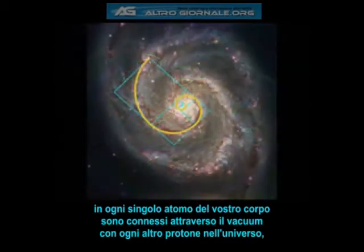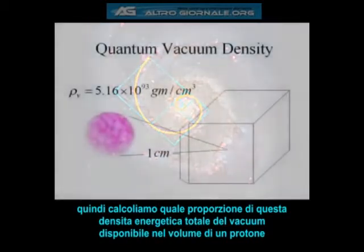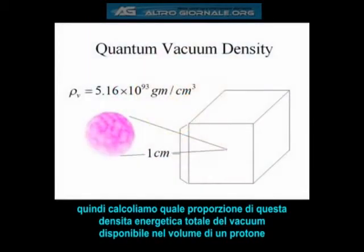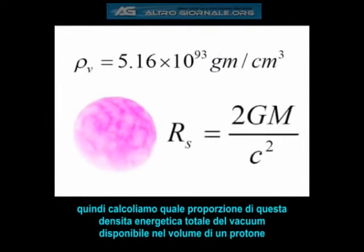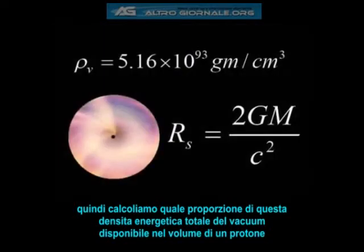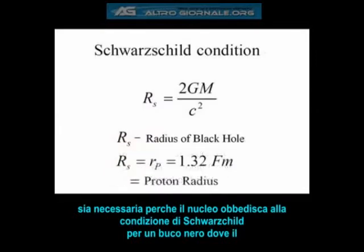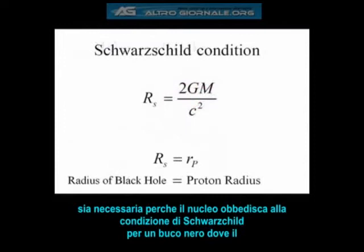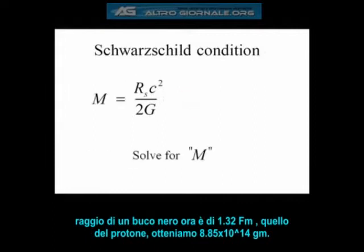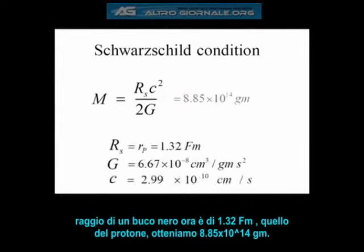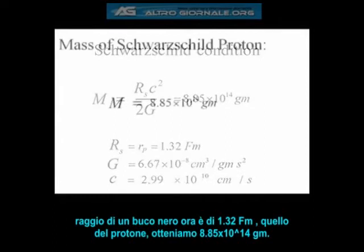Just think of every single proton inside every single atom in your body connected through the vacuum to every other proton in the universe. We then calculate what proportion of the total vacuum energy density available in a proton volume is necessary for the nucleon to obey the Schwarzschild condition for a black hole, where the radius is 1.32 femtometers, and solve for M. The mass needed is 8.85 times 10 to the 14th grams.